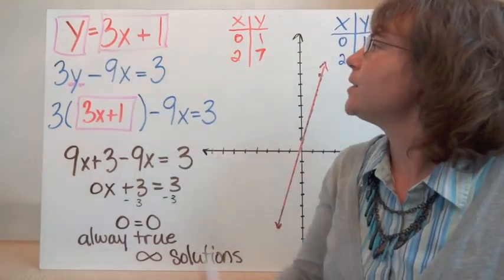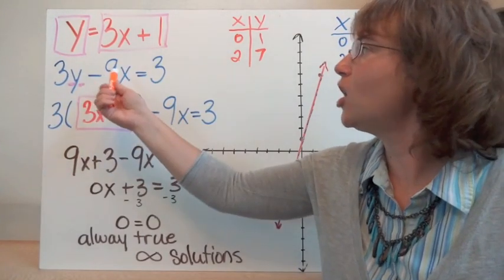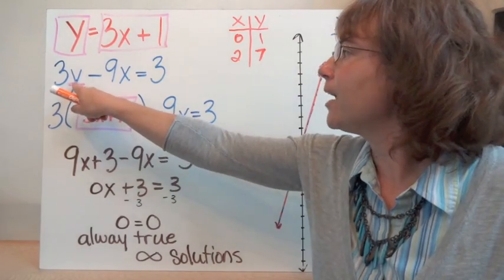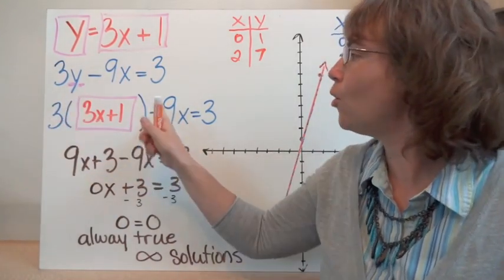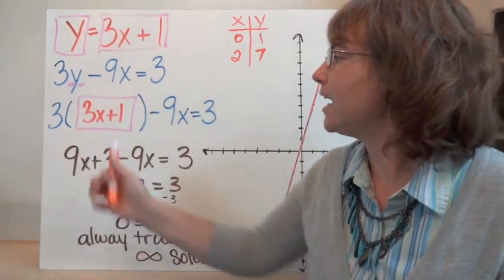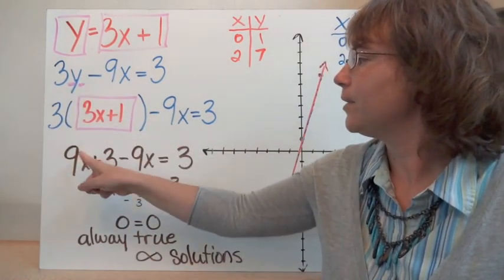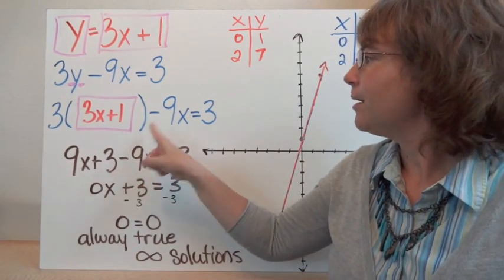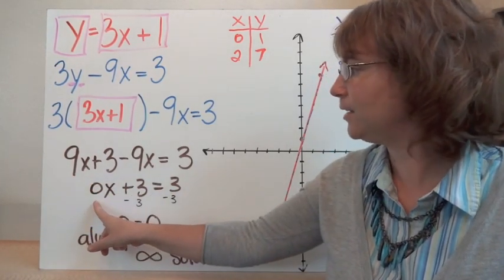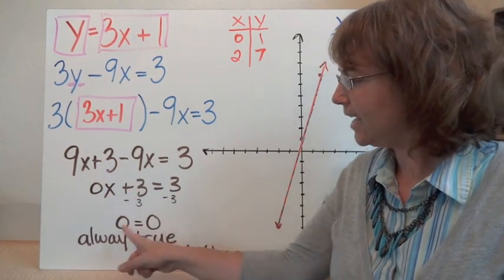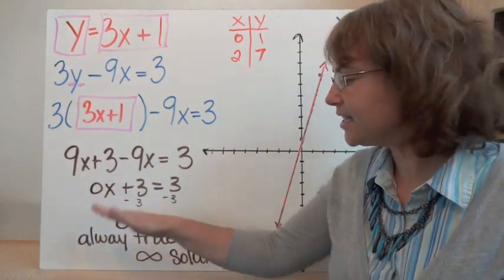Our last example: y equals 3x plus 1, and 3y minus 9x equals 3. We have one equation already solved for y. We're going to substitute 3x plus 1 in for y in the second equation. So 3 times (3x plus 1) minus 9x equals 3. Distributing the 3, I have 9x plus 3 minus 9x equals 3. Combining like terms, the 9x and negative 9x cancel to give 0. So I have 3 equals 3 — and then 0 equals 0. That is always true, no matter what number we choose for x, so it has infinitely many solutions.